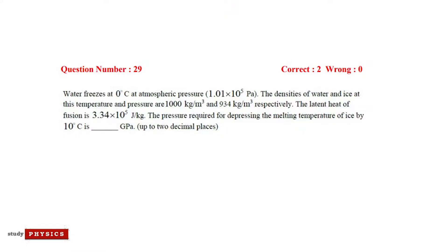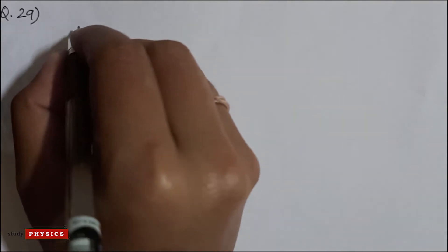Question number 29: water freezes at 0 degree centigrade at atmospheric pressure 1.01 into 10 to the 5 Pascal. The densities of water and ice at this temperature and pressure are 1000 kg per meter cube and 934 kg per meter cube respectively. The latent heat of fusion is 3.34 into 10 to the 5 joule per kg. The pressure required for depressing the melting temperature of ice by 10 degree centigrade is dash Giga Pascal.